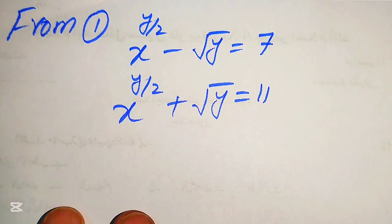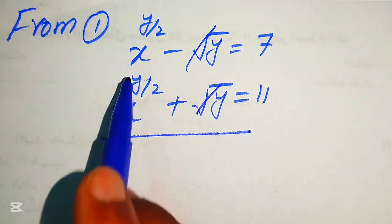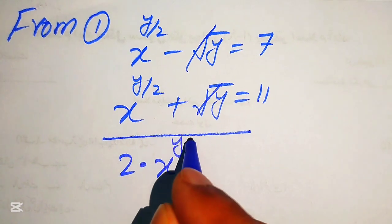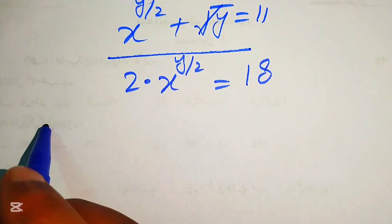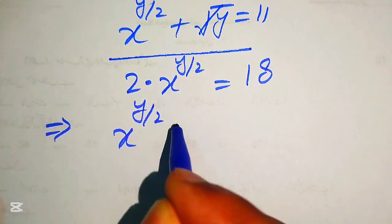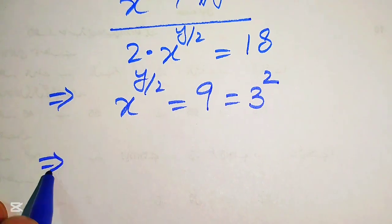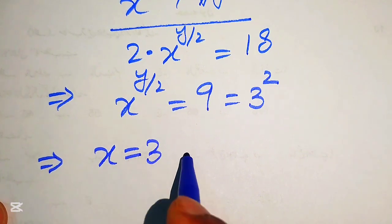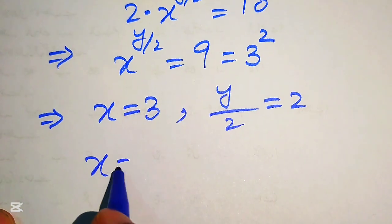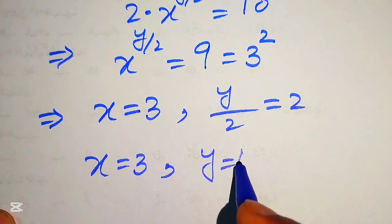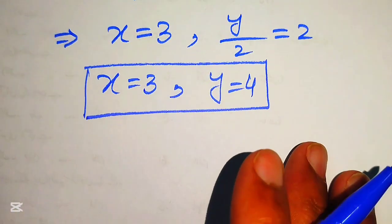Focusing on Case 1: we have x^(y/2) minus √y equals 7 and x^(y/2) plus √y equals 11. Adding these two equations, the √y terms cancel and we get 2·x^(y/2) equals 18, so x^(y/2) equals 9. Writing 9 as 3², we compare both sides and get x equals 3 and y/2 equals 2, giving y equals 4. The first solution is x = 3, y = 4.